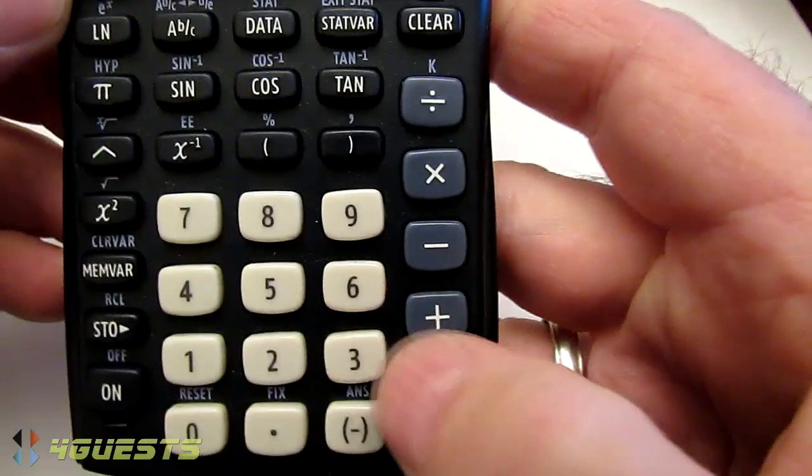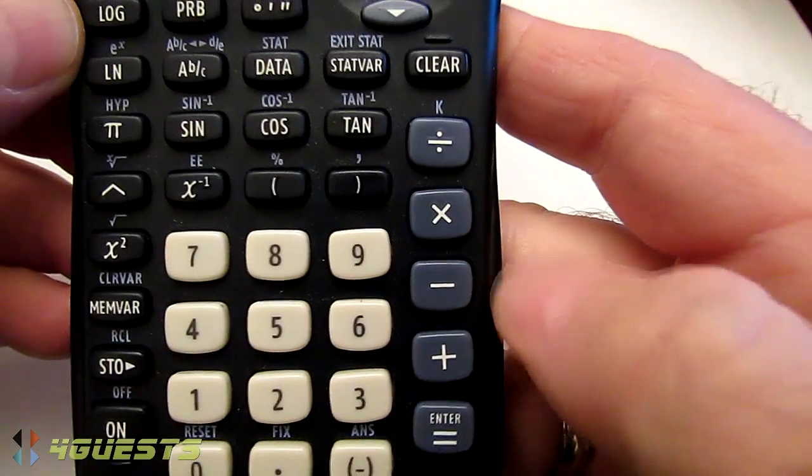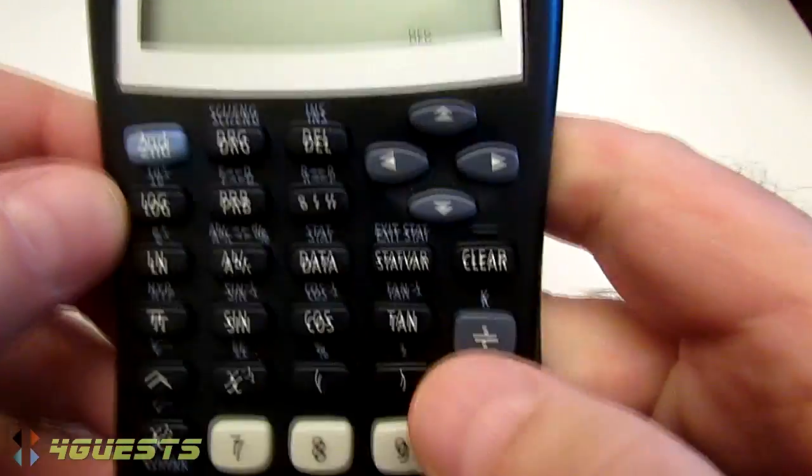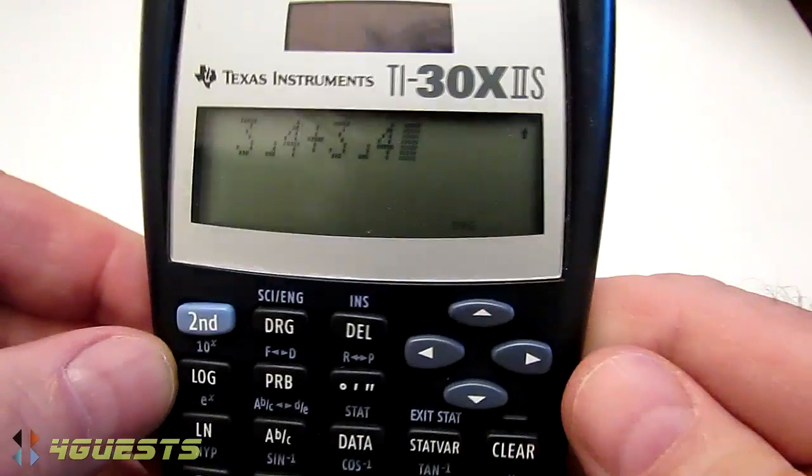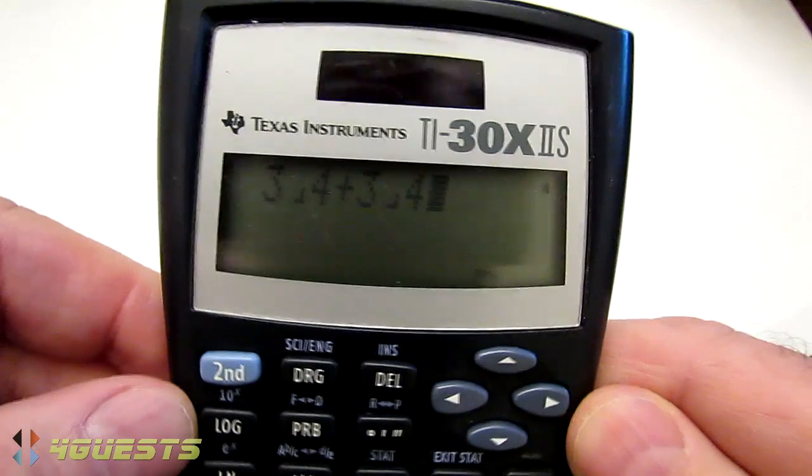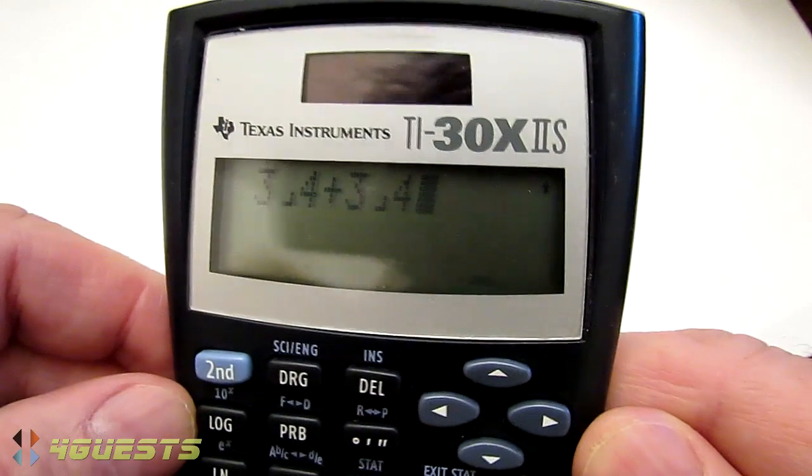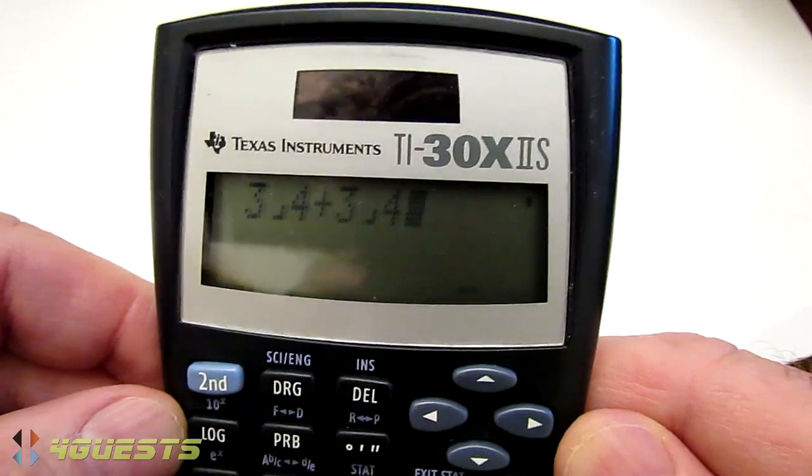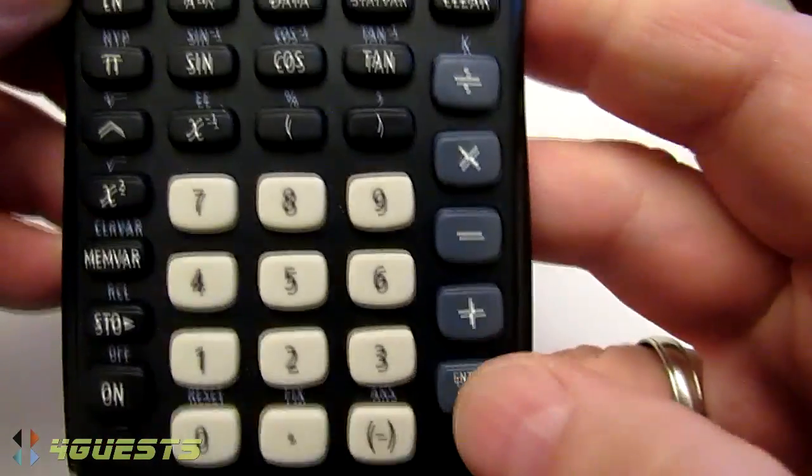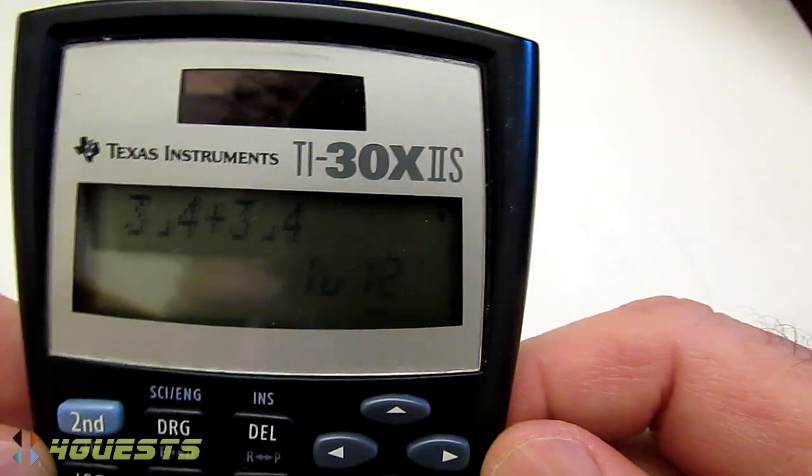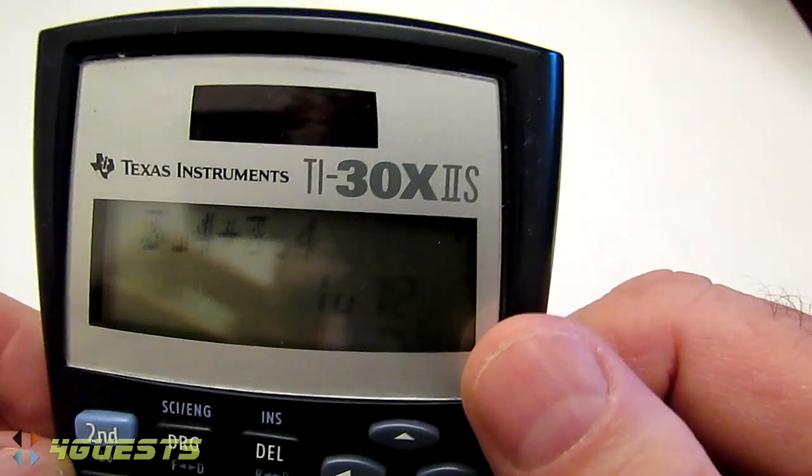And let's plus the 3 over 4, so we've randomly chosen to add 3 over 4 plus 3 over 4. 3 fourths plus 3 fourths equals 1 and 1 half.